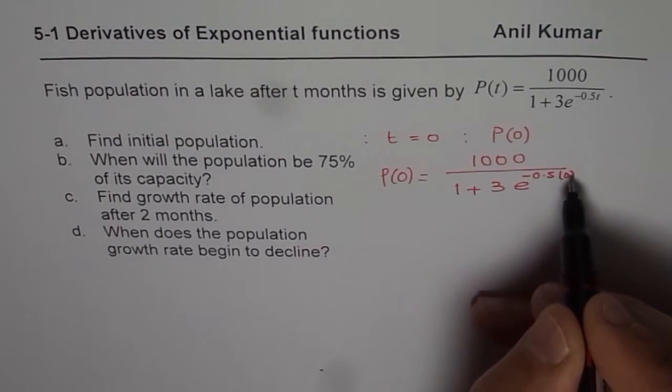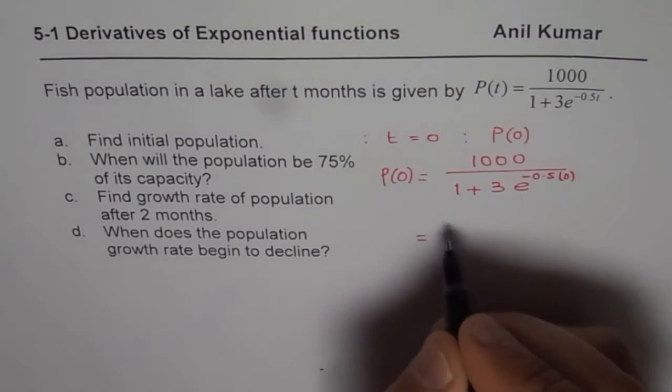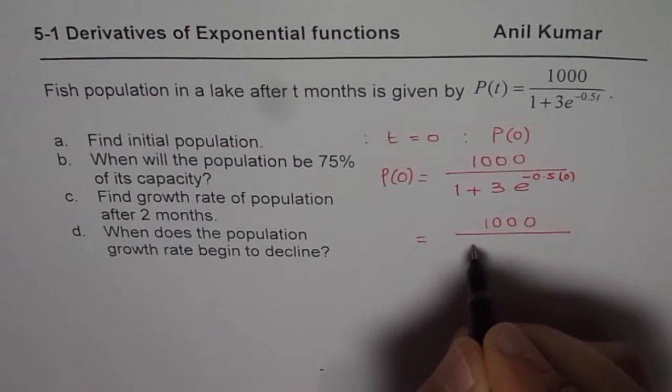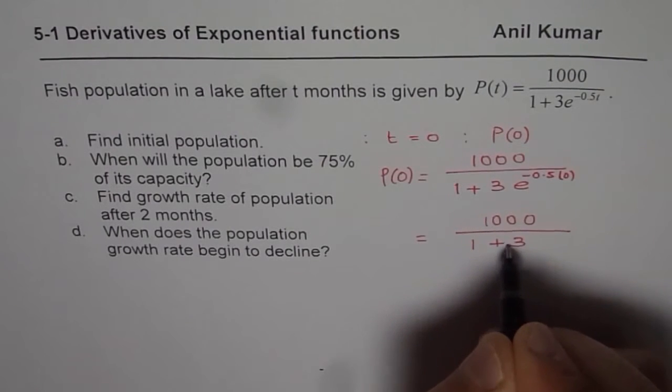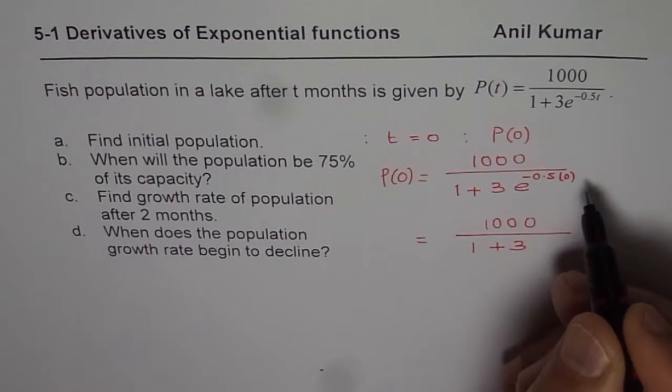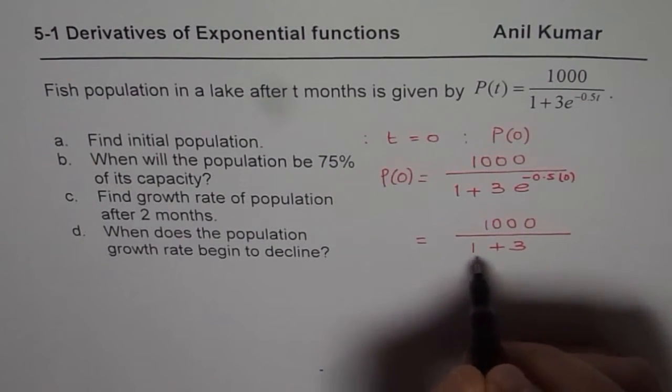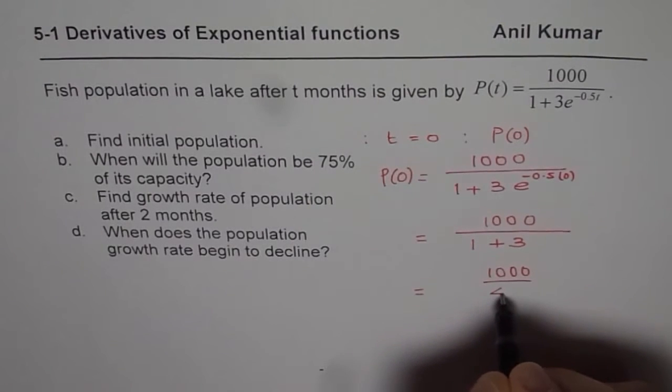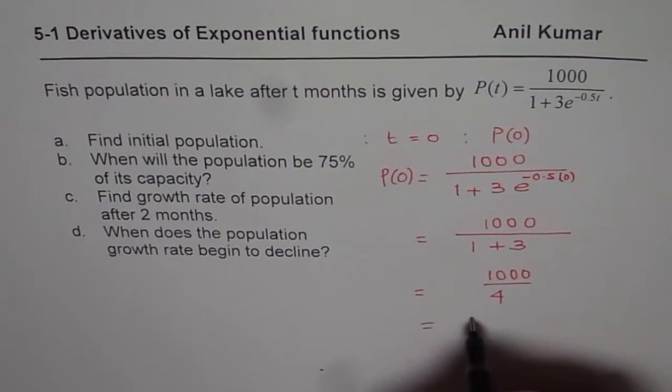Anything to the power of 0 is just 1. Therefore, I could write this as 1000 divided by 1 plus 3, because e to the power of 0 is going to be 1. So we have 1000 divided by 4, and clearly that is 250.